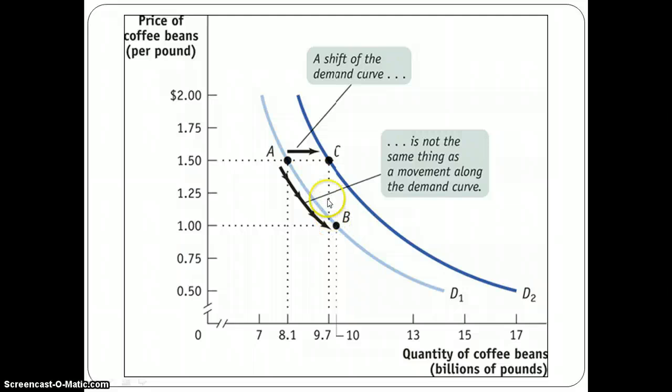There are times in which, though, my demand schedule for coffee will change and shift from A to C. And there are a number of reasons why that happens, and we'll talk about that in a second. But this is called a change in demand, because now I want more at $1.50 than I wanted before. So movement along the curve is caused by a change in price. A shift in the curve is caused by some other factor.